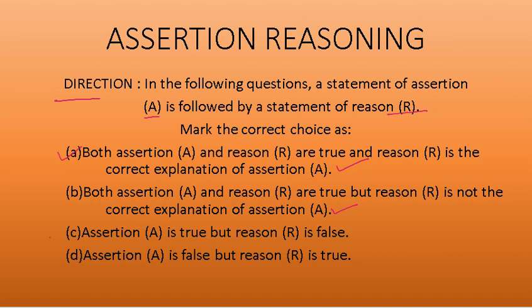Option C: Assertion is true, but reason is false. And Option D: Assertion A is false, but reason is true.